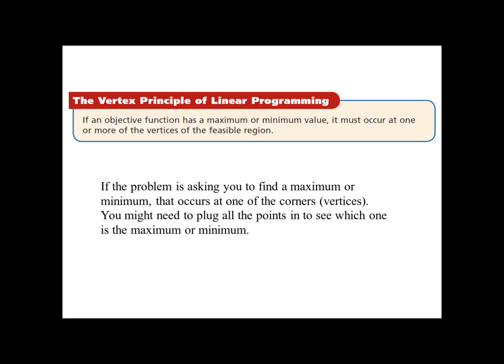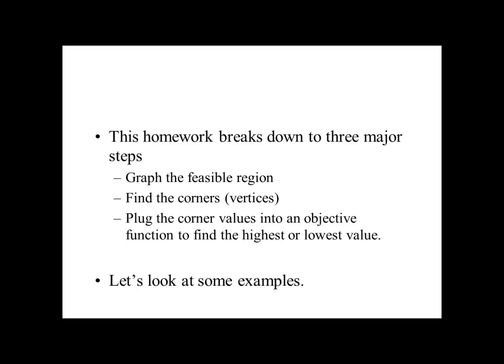Vertices is just a fancy word for corners. You might need to plug in all the corners to see which one gives the maximum or minimum — honestly that's going to be the smallest part of your problem. The biggest part of these story problems is coming up with the constraint equations. Your homework is going to break down into three major steps: graphing the feasible region, finding the corners, and then plugging those corner values in. That first one is going to be the hardest. In story problems, the hardest part is finding the feasible region. So let's take a look at some examples.